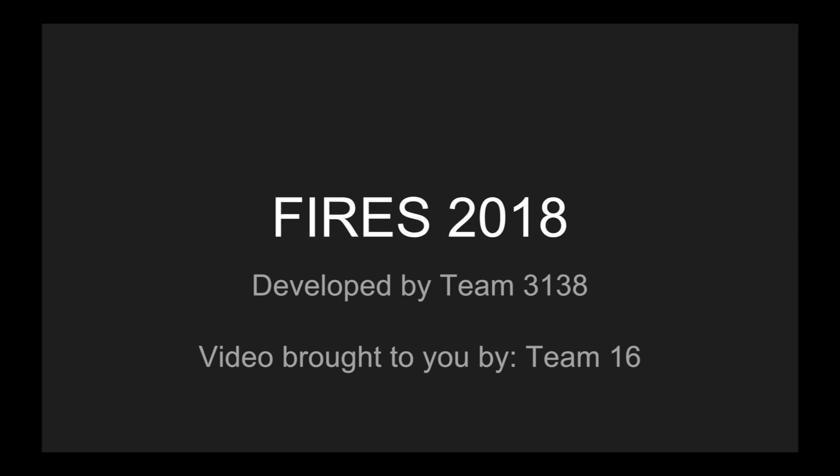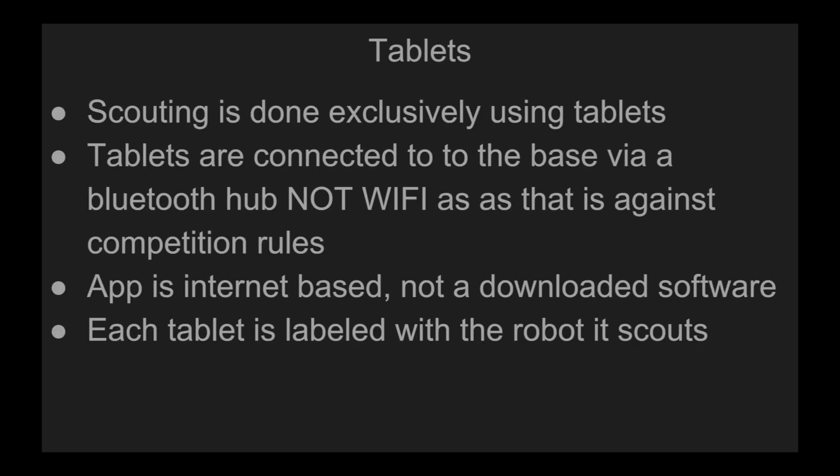This is a brief tutorial on how to use the Fire Scouting app as developed by Team 3138. All scouting is done via tablets, and the tablets are connected to a base like a phone via a Bluetooth hub, and not WiFi, as that is against competition rules. The app is internet-based and is not downloadable software, and each tablet is labeled with the robot it scouts.